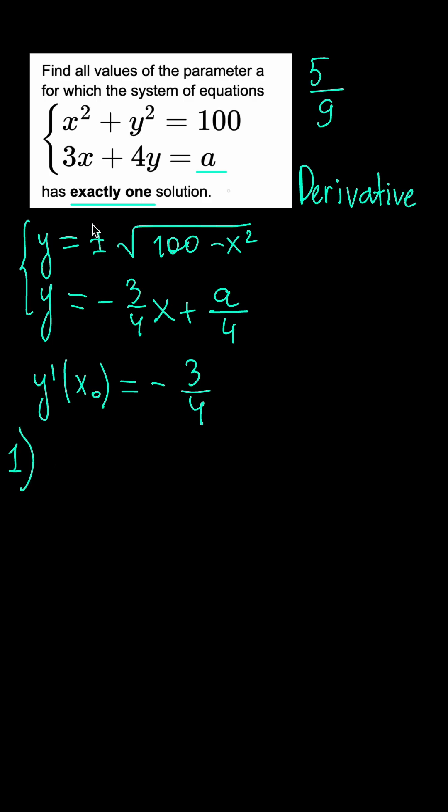So in first case we've got the derivative of plus square root, which is equal to minus 2x divided by two square roots of 100 minus x squared.